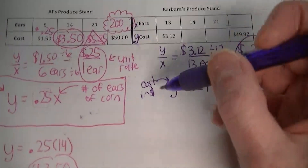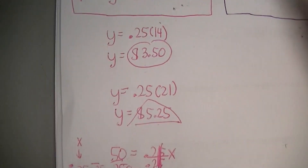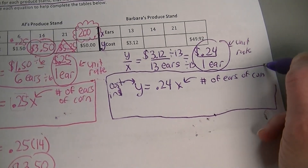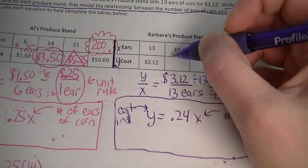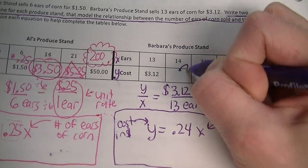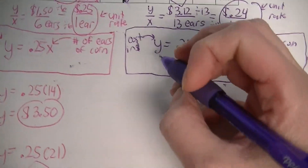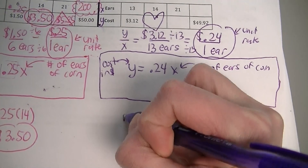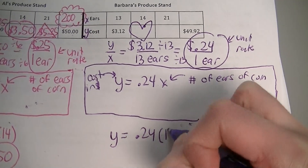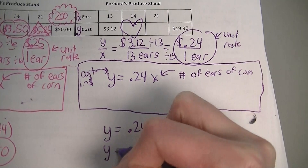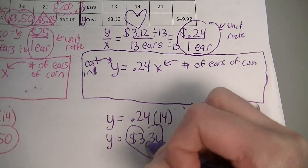You should pause your video and do the Barbara's side of the problem yourself, because I just modeled exactly how to do it over here. It would be really smart to get that practice working by yourself and then unpause to check your answer. For Barbara's first missing value — I'll draw a heart — we need the cost of 14 ears of corn. I don't know the cost, so I keep that as y. The unit rate is 24 hundredths and the number of ears of corn is 14. So y equals 24 hundredths times 14, which is $3.36.